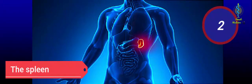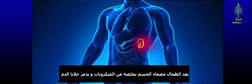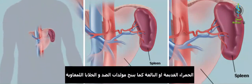The spleen. The spleen is a blood filtering organ that removes microbes and destroys old or damaged red blood cells. It also makes antibodies and lymphocytes.